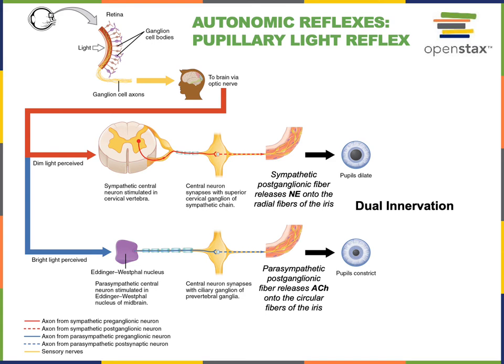The example of an autonomic reflex shown here is the pupillary light reflex. The receptors are photoreceptors in the retina of the eye that detect light and relay information through the afferent pathway of the optic nerve, cranial nerve number two, into the brain. The brain is the control center that processes the sensory information, and if the light levels are too high, the brain will activate the efferent pathway through the parasympathetic division of the autonomic nervous system.